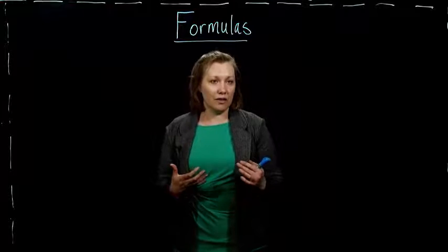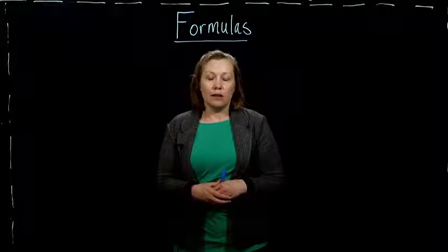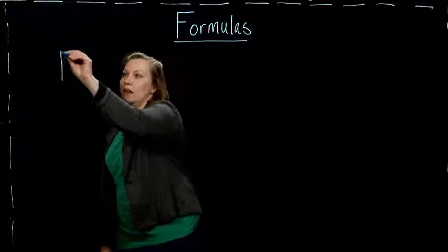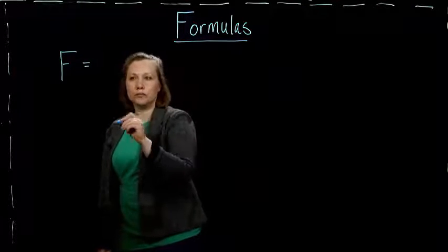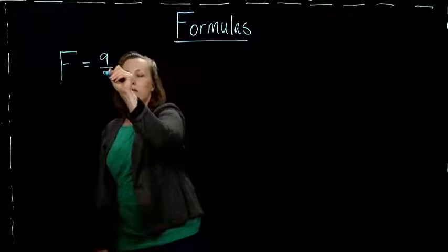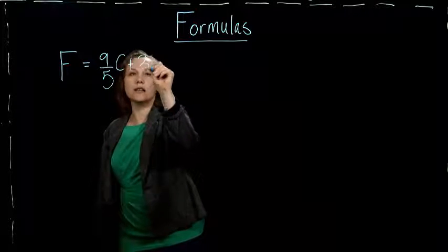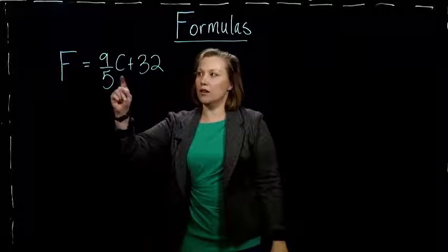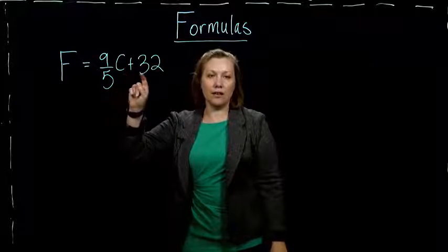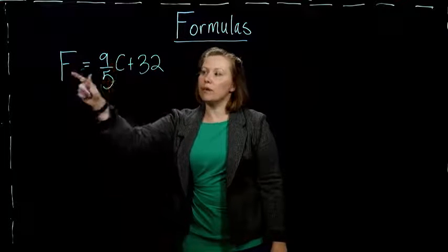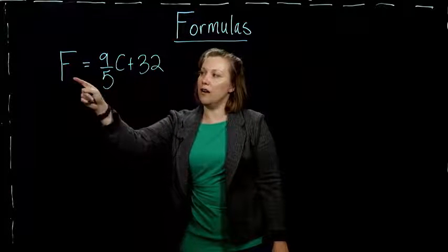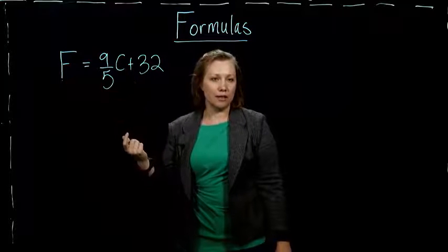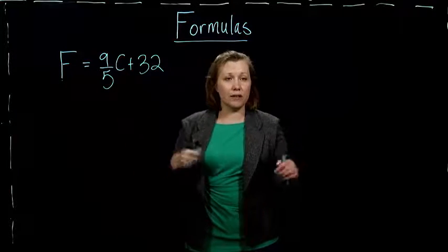There are formulas for things like interest. One formula that you might see if you were to take a science class would be F equals 9 fifths C plus 32. So this gives us the Fahrenheit temperature if we plug in the Celsius temperature. So it relates the temperature measured in Fahrenheit to a temperature that we've measured in Celsius. We can get the equivalent Fahrenheit temperature.